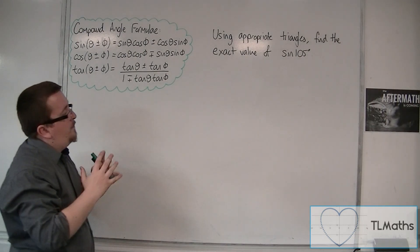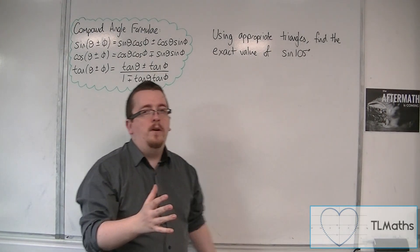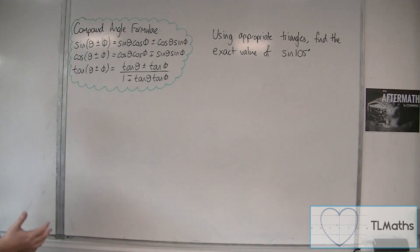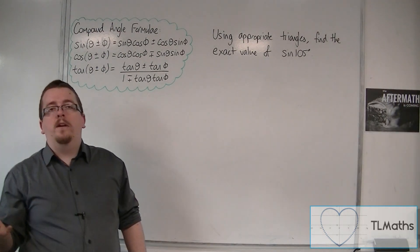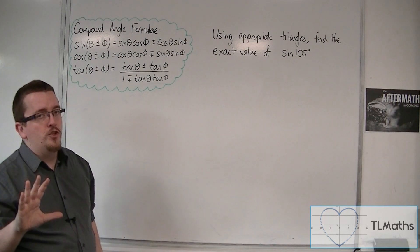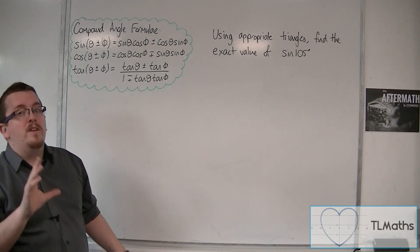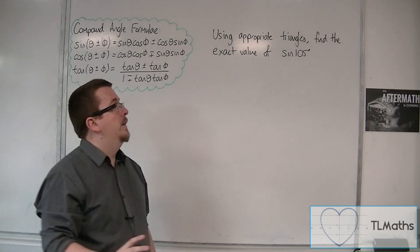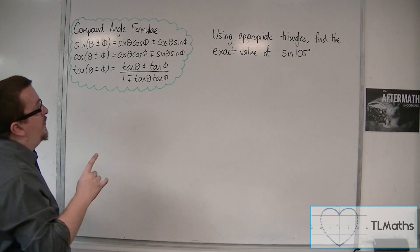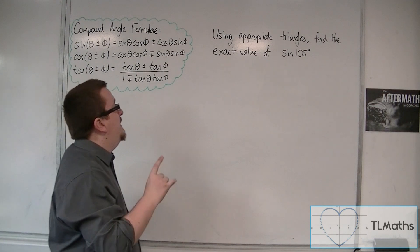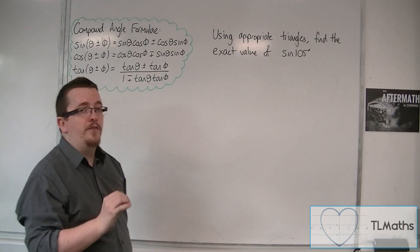It's best if we just go straight in and use them — I'm not going to show you where these come from; you can look that up, and there will likely be videos on that on YouTube. So I'm going to work with this example: using appropriate triangles, find the exact value of sine of 105 degrees.